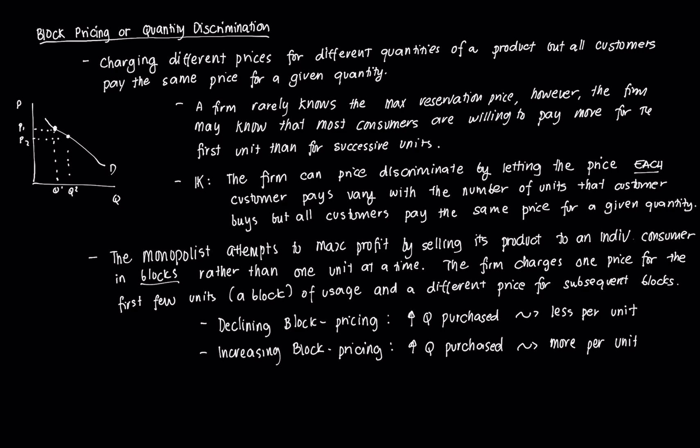Now in this case, what happens is that each firm can price discriminate by letting the price each customer pays vary with the number of units that the customer buys. But essentially, all customers pay for the same price for any given quantity. And that given quantity is segmented into what we call blocks. So the monopolist attempts to maximize profit by selling its product to an individual consumer in blocks, or in chunks, or in certain groupings of quantities, rather than pricing at one unit at a time.